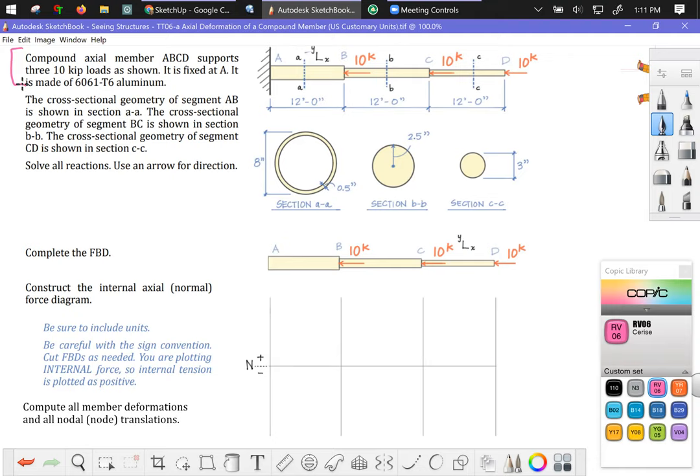We have a compound axial member, ABCD. It has nodes at A, B, C, and D. We're supporting three 10 kip loads as shown. So we have 10 kips applied here, 10 kips applied here, 10 kips applied here, and a fixed connection here at A. That fixed connection means that plane A is not permitted to move or translate, and we will develop a force reaction at A in order to keep this structure in static equilibrium.